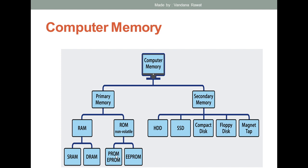In case of secondary memory, these are additional memories which you can add to your computer system. Like a hard disk — if you want to increase the size of the memory, you can increase the secondary memory with the help of a hard disk, SSD, compact disk (CD), or floppy disk. The concept of floppy disk is now no longer available; nowadays we just use HDD, pen drive, etc. All these terms come under secondary memory.